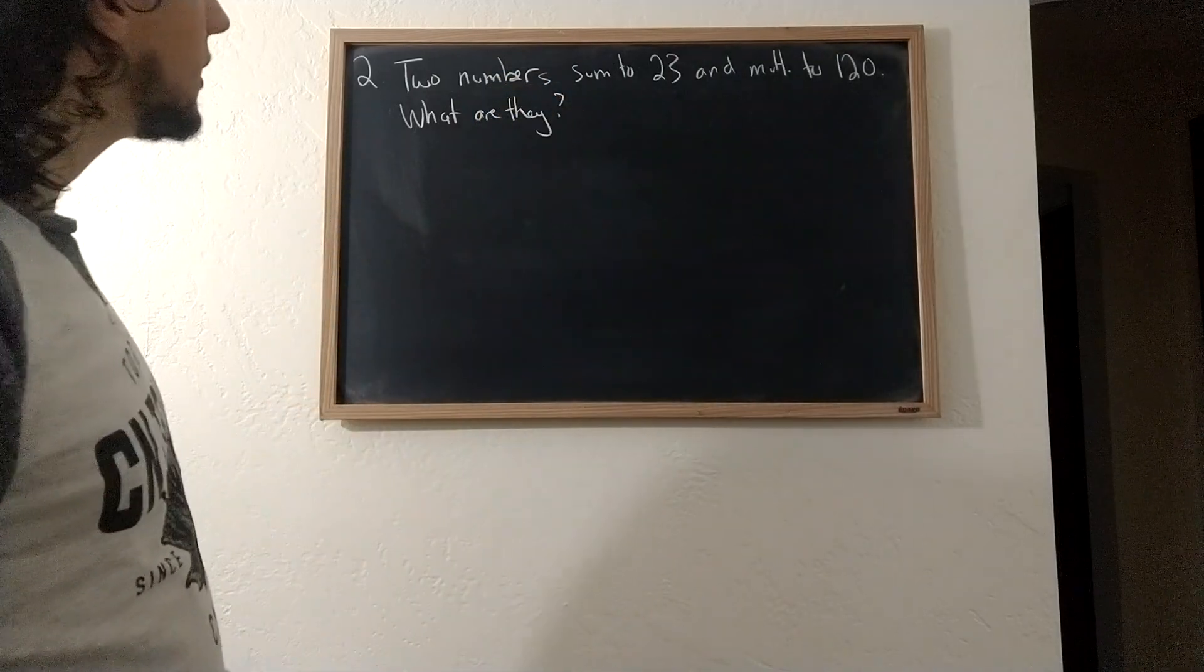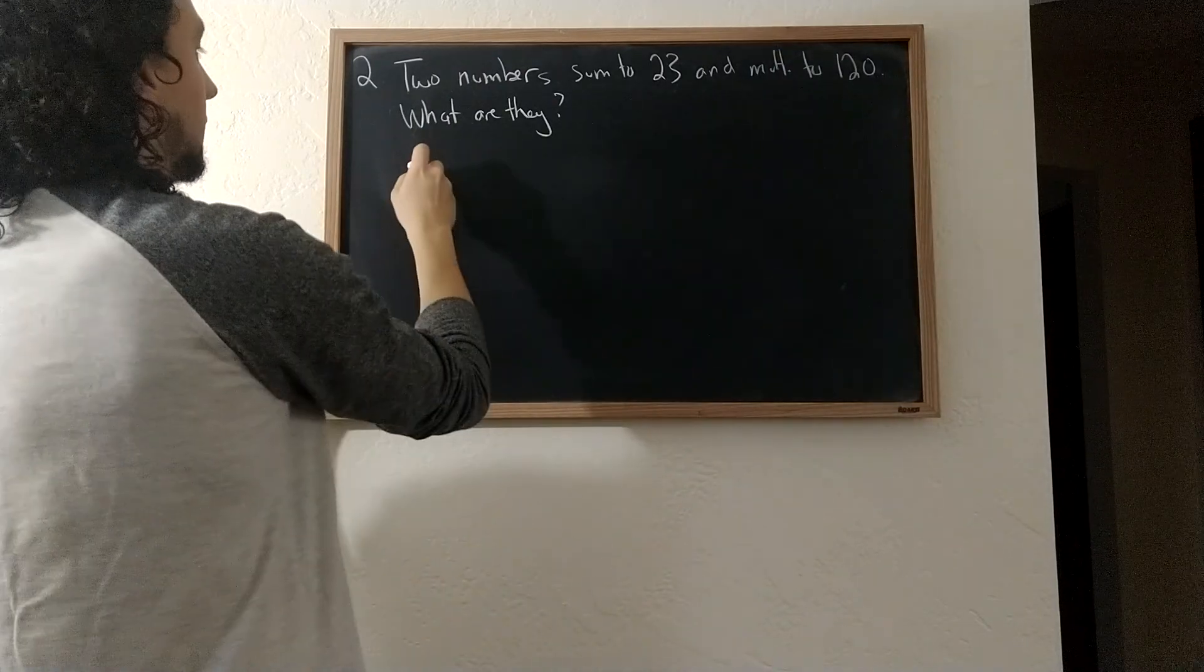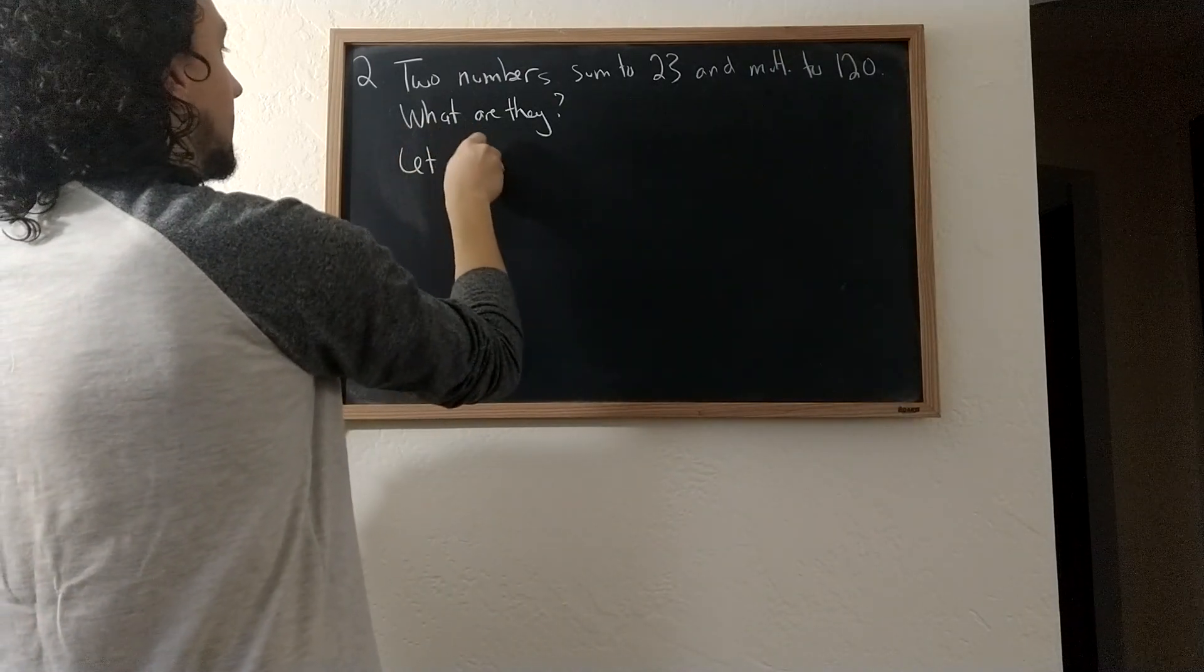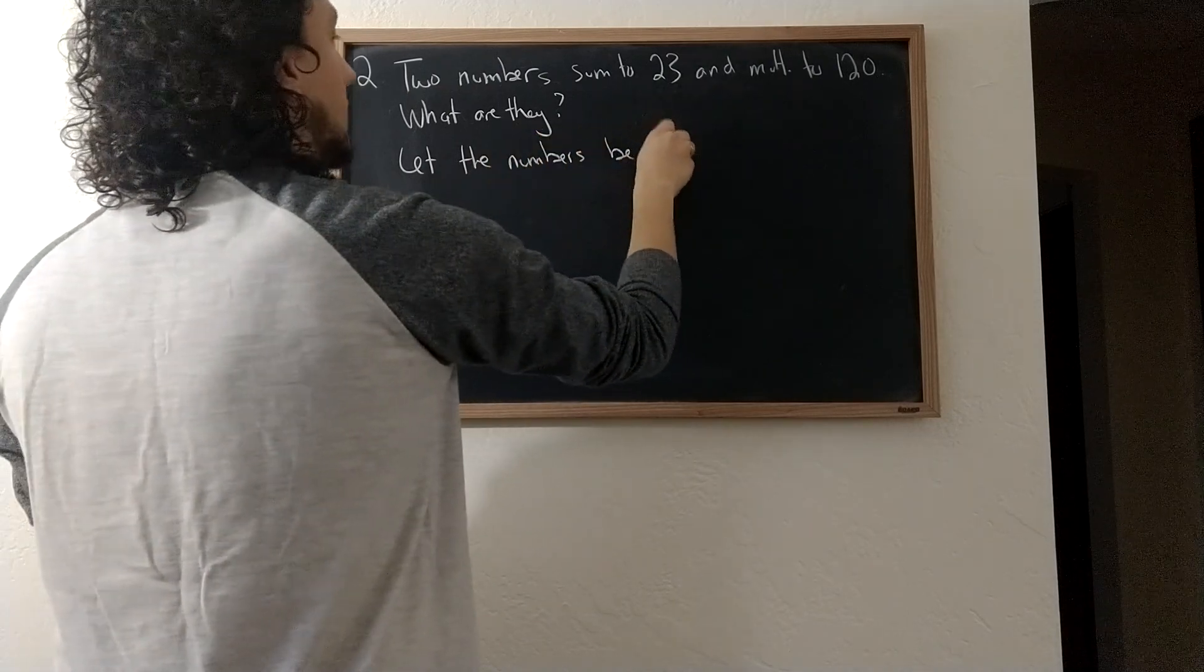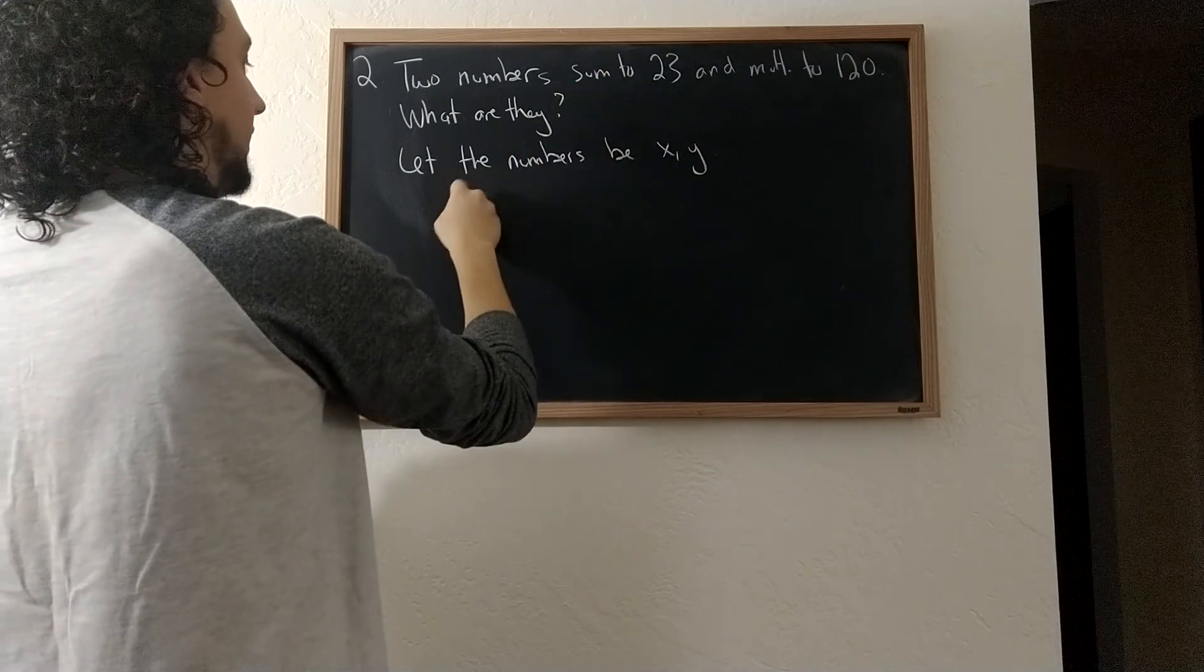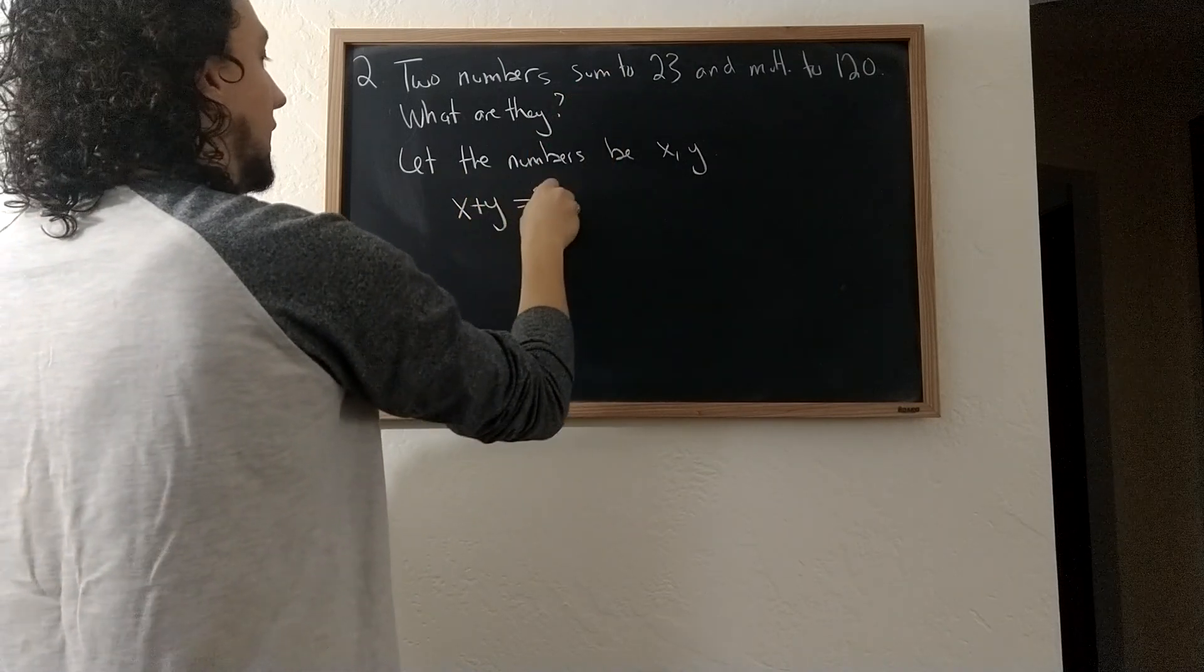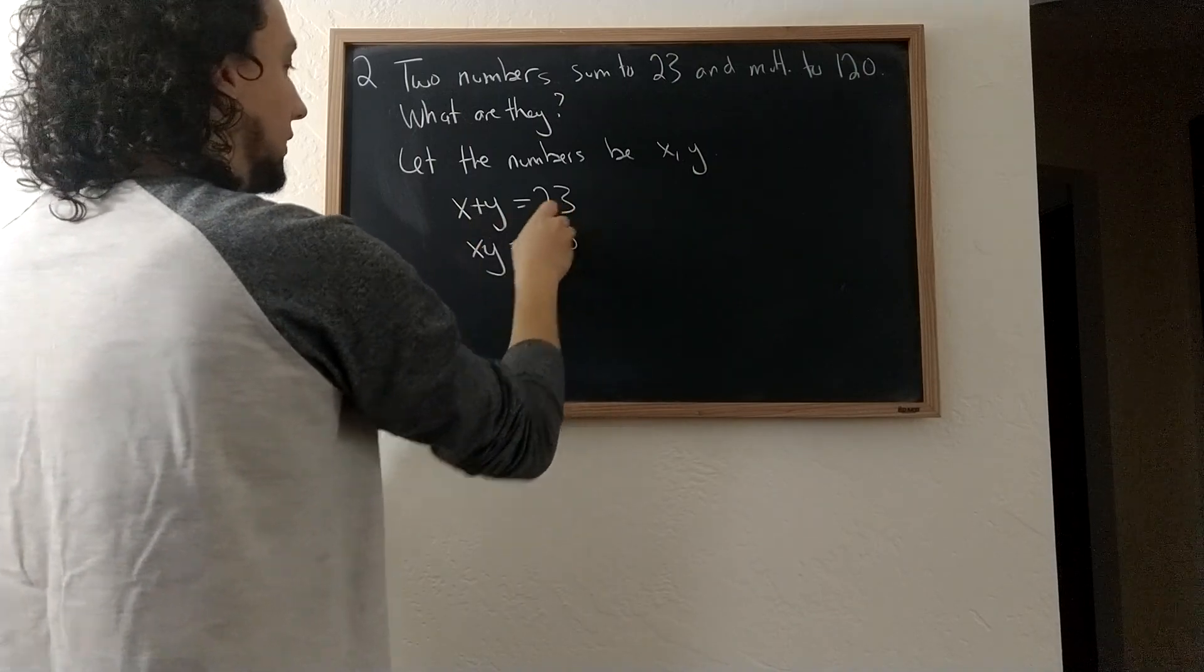So two numbers add up to 23 and multiply to 120. Let the numbers be x and y. And now we have two constraints. We have x plus y equals 23 and x times y equals 120.